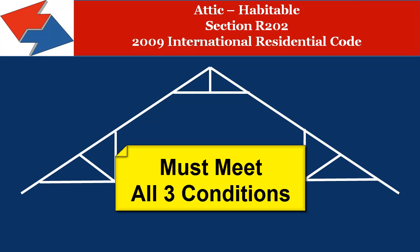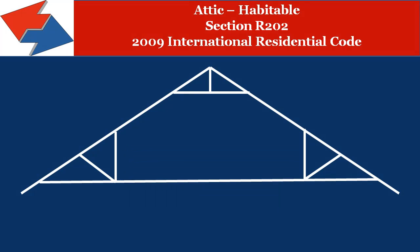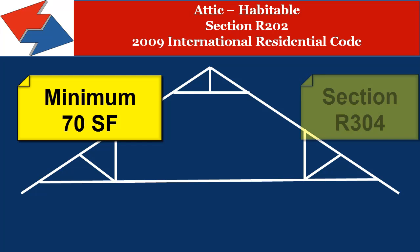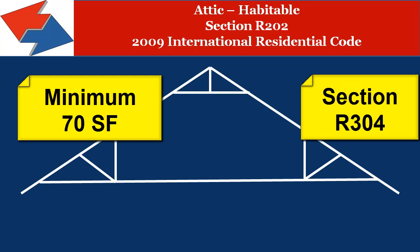For a habitable attic not to be considered a story in the 2009 International Residential Code, it must meet all of the following conditions. Number one, the occupiable floor area must be a minimum of 70 square feet as per the requirements of Section R304.